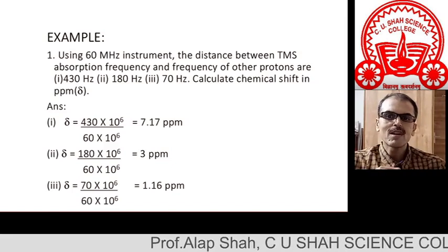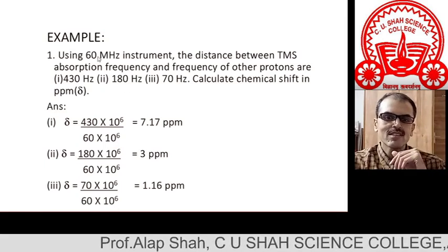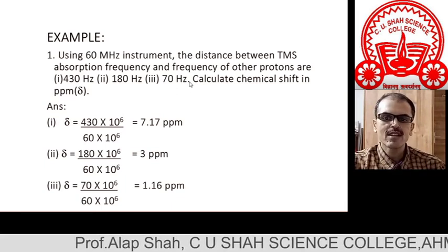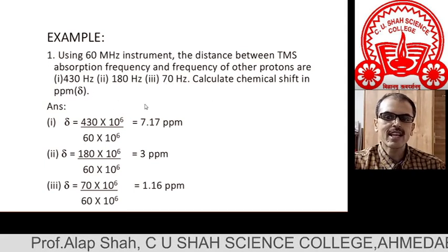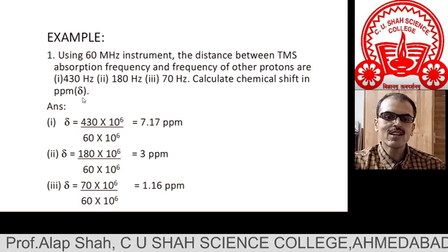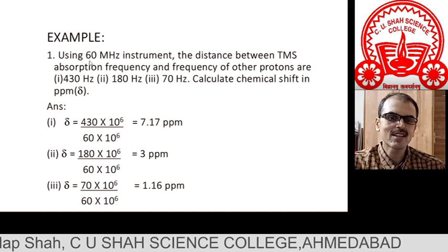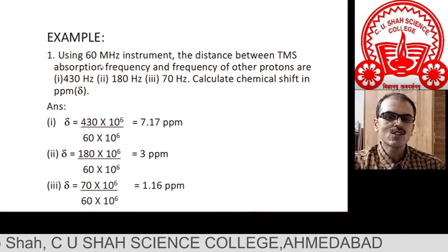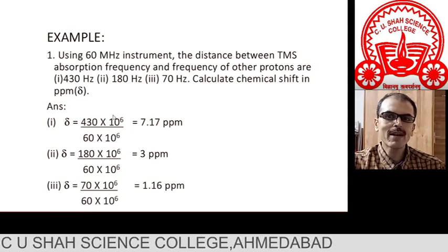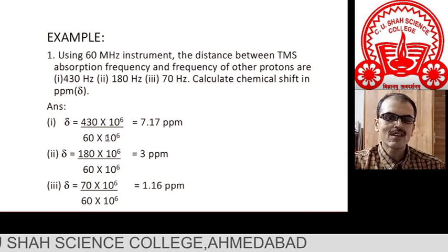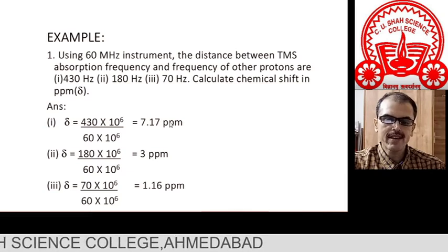Here is a problem related to delta. Using a 60 MHz instrument, the distances between TMS absorption and three other proton signals are 430, 180, and 70 Hz. Calculate the chemical shift. We will discuss one of them: delta equals nu divided by nu-zero. Nu is 430 Hz; nu-zero is 60 MHz, which equals 60 times 10 to the power 6. Multiplying through by 10 to the power 6, we get 430 divided by 60, which equals 7.17 PPM.